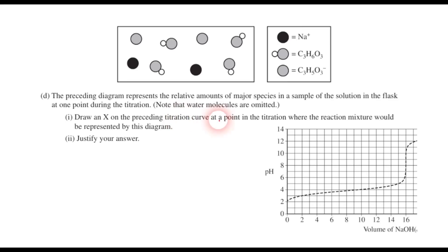Now, we're going to move forward here. It says the preceding diagram represents the relative amounts of major species in a sample of the solution in the flask at one point during the titration. Of course, we're omitting the water. And it says draw an X on the titration curve at a point in the titration where the reaction mixture would be represented by this diagram. This is one of those cases where I think it's actually easier to justify before you put the X there. Probably what we want to notice is that we have a very specific ratio of conjugate base to conjugate acid. We have two ions of conjugate base for every four molecules of weak acid. So we can plug this into the Henderson-Hasselbalch equation, and we're trying to solve for the pH. And we just said that the pKa of the acid is 3.9, and the ratio of conjugate base to weak acid is 2 to 4.